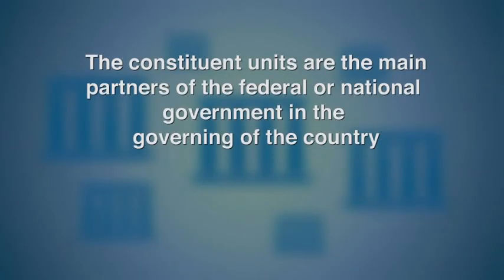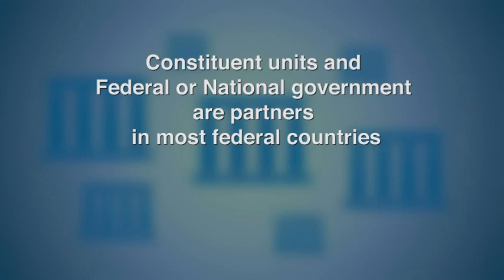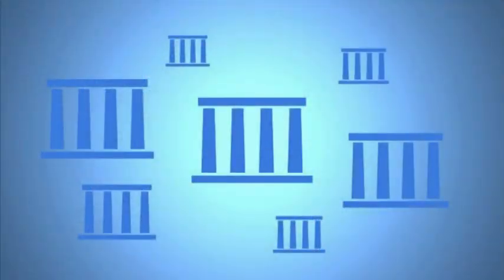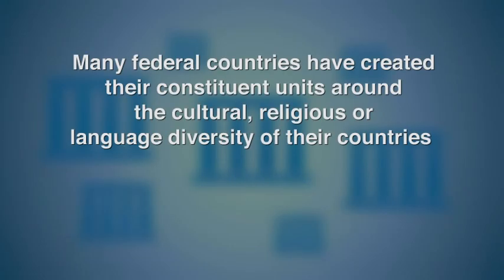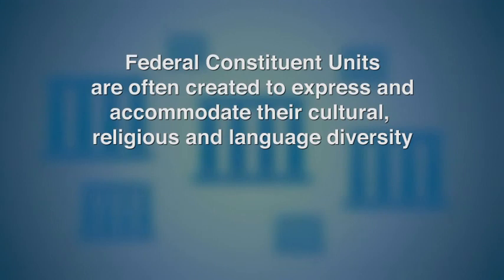Statement three: The constituent units are the main partners of the federal or central government in the governing of a federal country. That is true. In federal countries, the country is governed through a partnership between the federal or national government and the governments of the constituent units. Statement four: A number of federal countries have created their constituent units around the religious, cultural, or linguistic diversity of those countries. That is true — federal constituent units are sometimes created to accommodate the country's cultural, religious, and language diversity.